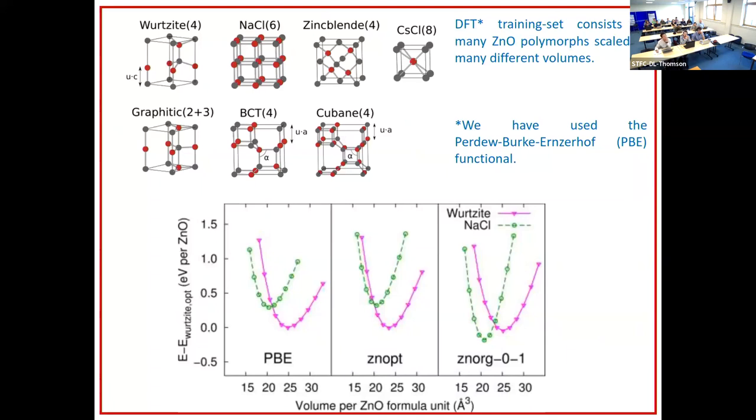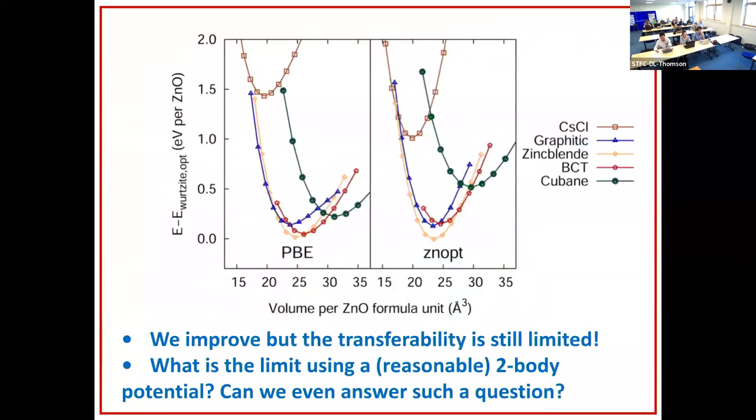If you do this simple exercise, what you get is the result to the far right there. You see that these two polymorphs actually have incorrect ordering. DFT would predict that the ground state structure for zinc oxide would be sodium chloride, which is not really what you expect to be seeing.